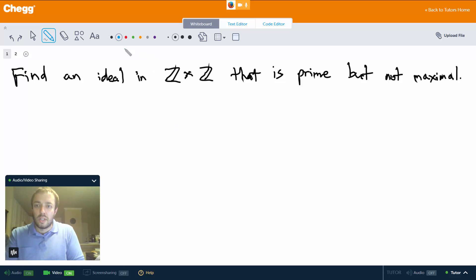So let's consider the set I equals the set of all points (m,0) such that m is an integer.